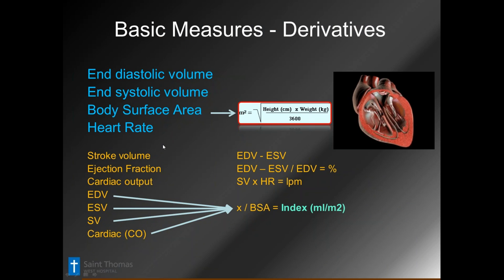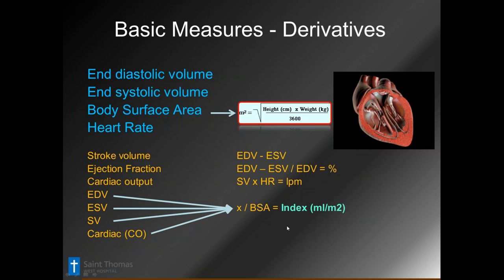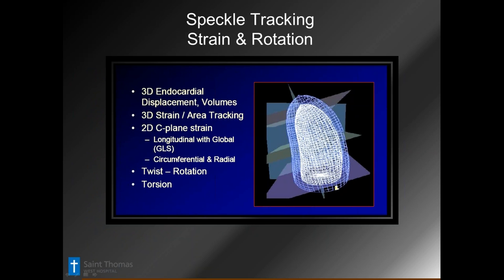We want to be sure that our reporting package gets these key things: we really just want volumes, body surface area, and heart rate — these give the heart failure specialist determinants to treat the patient: stroke volume index, cardiac output, and cardiac index — very simple things to calculate with these basic numbers. Then in the deeper section, we look at what we can do with 3D strain and area tracking, comparing 3D strains to 2D strains, and assessing how important twist and rotation really are.